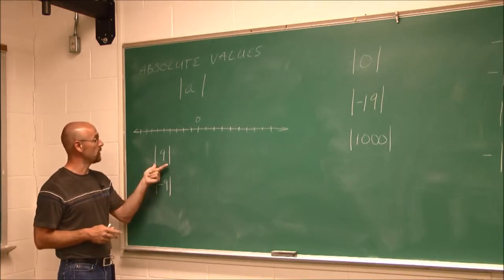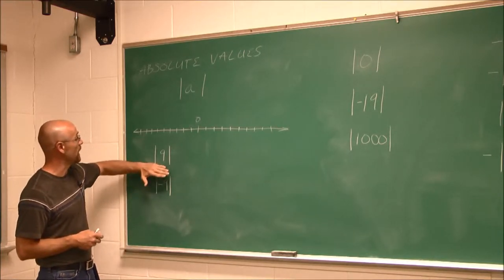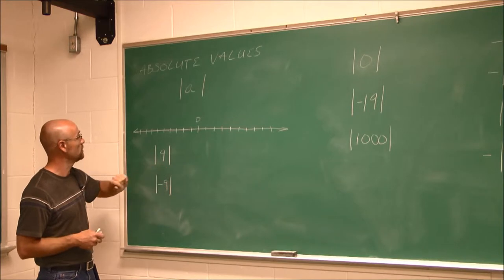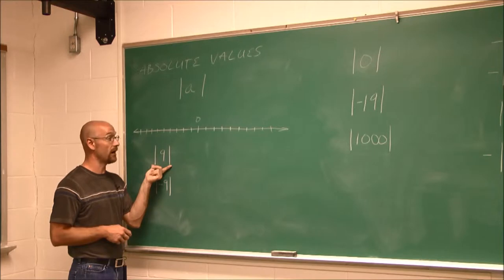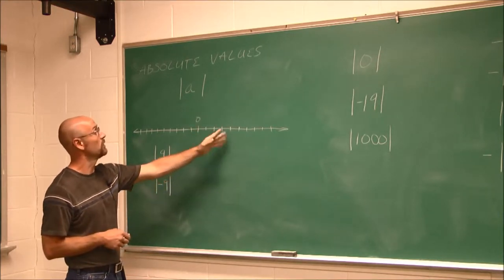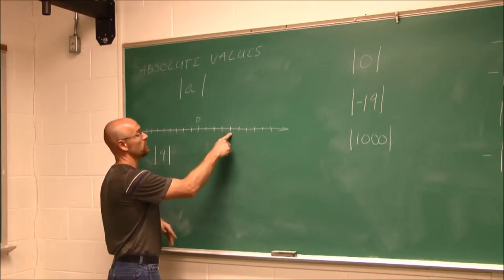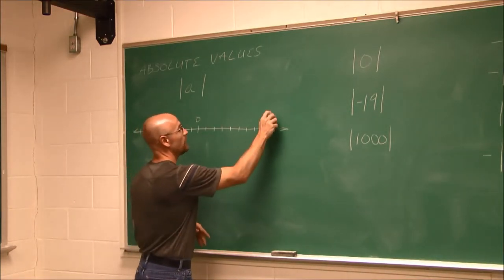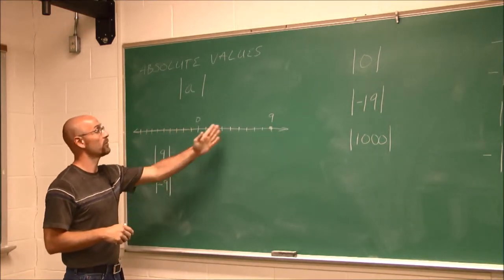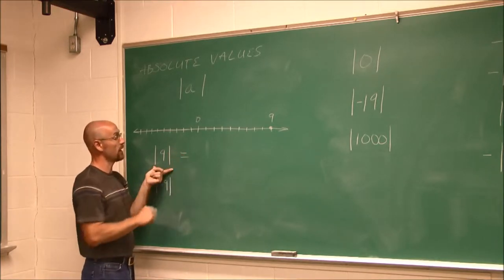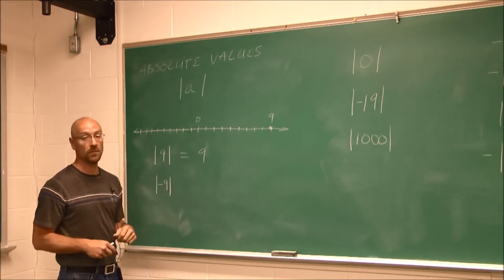What an absolute value asks is how far from 0. In this example, we have the absolute value of 9. This is saying how far is 9 from 0. Each one of these tick marks represents one unit, so counting 1, 2, 3, 4, 5, 6, 7, 8, 9 — this is where we find 9 on the number line. How far is 9 from 0? It's 9 units away.